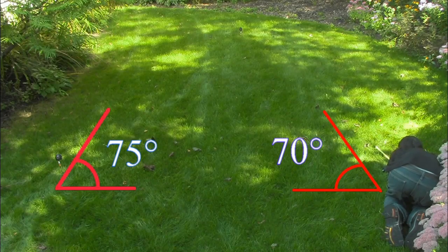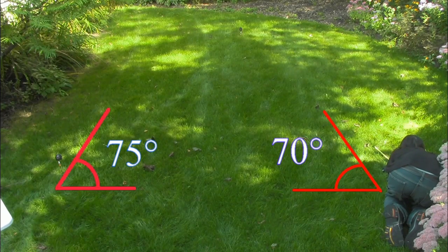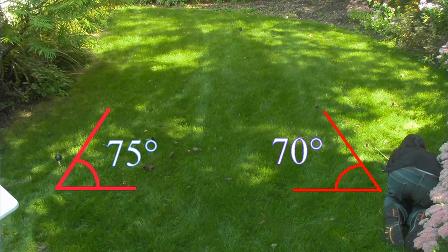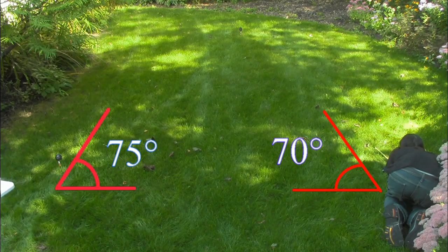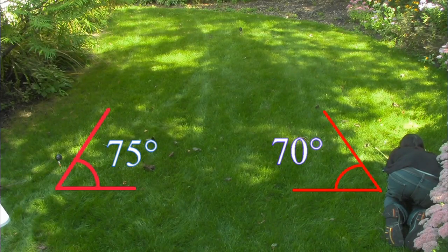We now have one side and two angles. We now know the rest of the triangle and we can find the distance to the object and check our answers after.